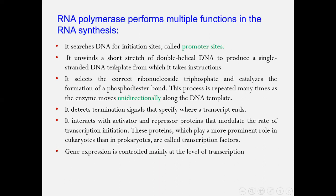The initiation site, which is the promoter, first unwinds so two strands separate. Transcription is unidirectional because only one strand works. One strand runs in the five to three direction, and the other in the three to five direction. Replication goes both five to three and three to five, but transcription is only in one direction — three to five on the template strand.